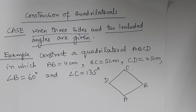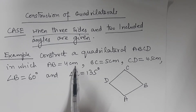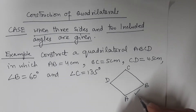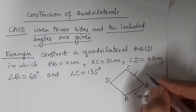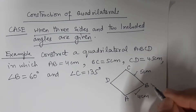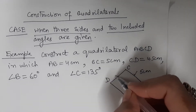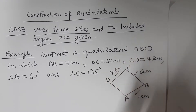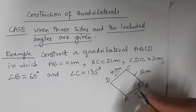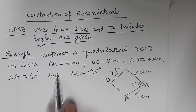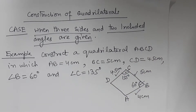In this question we have to construct a quadrilateral ABCD in which AB is 4 cm, BC is 5 cm, CD is 4.5 cm, angle B is 60 degrees, and angle C is 135 degrees. I am putting tick marks so you can see what all is given.